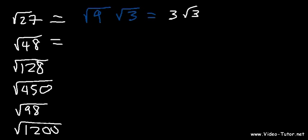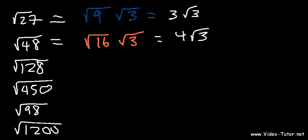What's the highest perfect square that goes into 48? 4 goes into 48, but so does 16. Starting with the highest perfect square makes simplifying easier, especially with larger numbers. 48 divided by 16 is 3. The square root of 16 is 4, so this simplifies to 4 root 3.